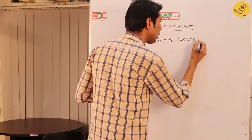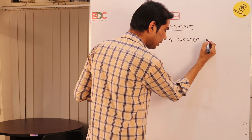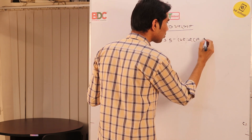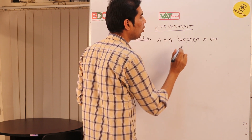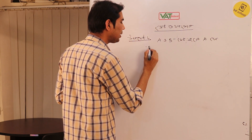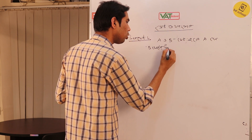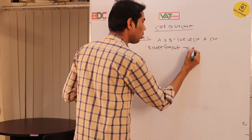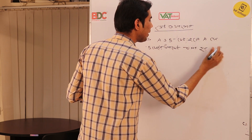A set, B set — taking A and B sets. B set, U set, B là.